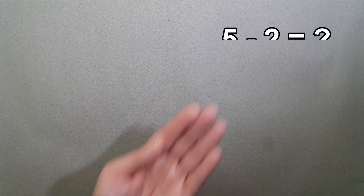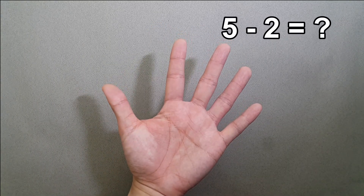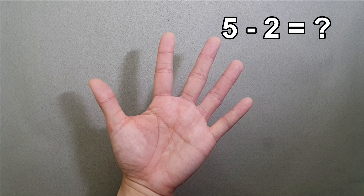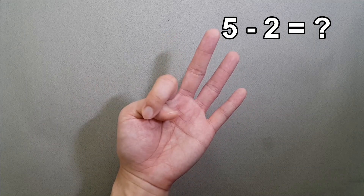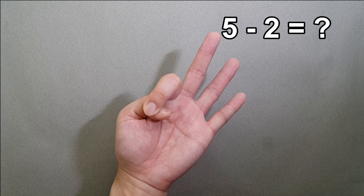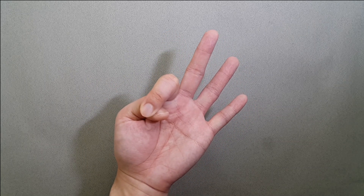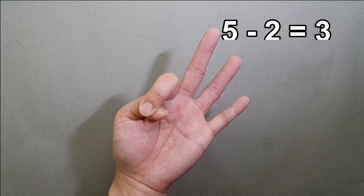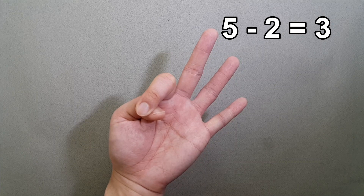What is 5 minus 2? 5 fingers, minus 2, equals 3. So 5 minus 2 is 3.